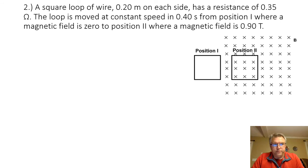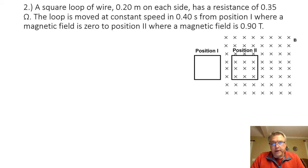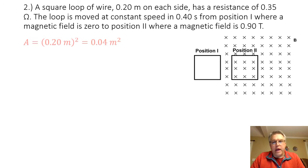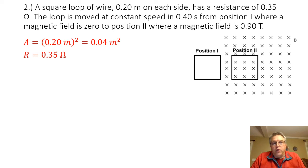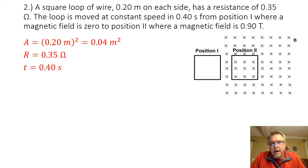On to problem number two. We have a square loop of wire, 0.20 meters on each side, with a resistance of 0.35 ohms. The loop is moved at constant speed in 0.40 seconds from position one, where the magnetic field is zero, to position two, where the magnetic field is 0.90 tesla. The area of the loop is 0.20 squared, giving 0.04 square meters. The resistance is 0.35 ohms, the time is 0.40 seconds, and the maximum magnetic field is 0.90 tesla.